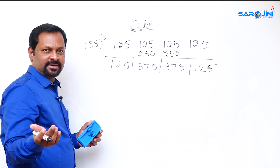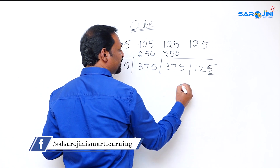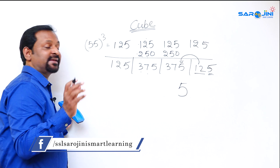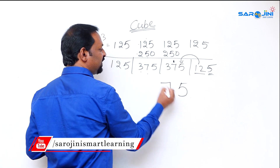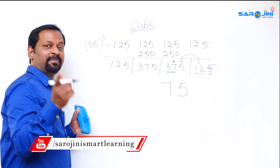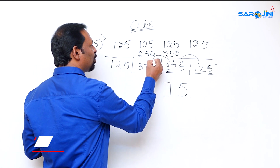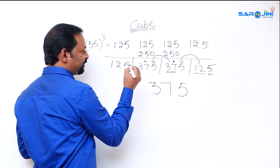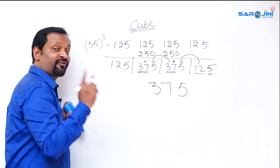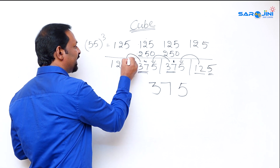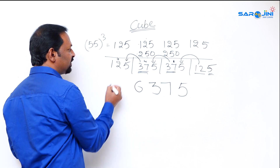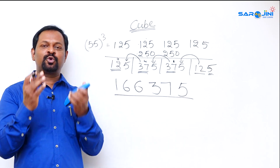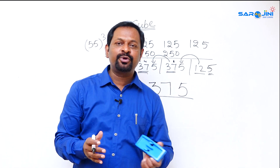Now balancing 55 cube from the right: take 5, remaining 12 carries forward; 12 + 5 = 17, write 7 carry 1; this makes 37 + 1 = 38, carry 38 forward; 38 + 5 = 43, write 3 carry 4; this part becomes 37 + 4 = 41, carry 41; 41 + 5 = 46, write 6 carry 4; remaining 16 gives the leading digits. The final answer for 55 cube is 166,375.